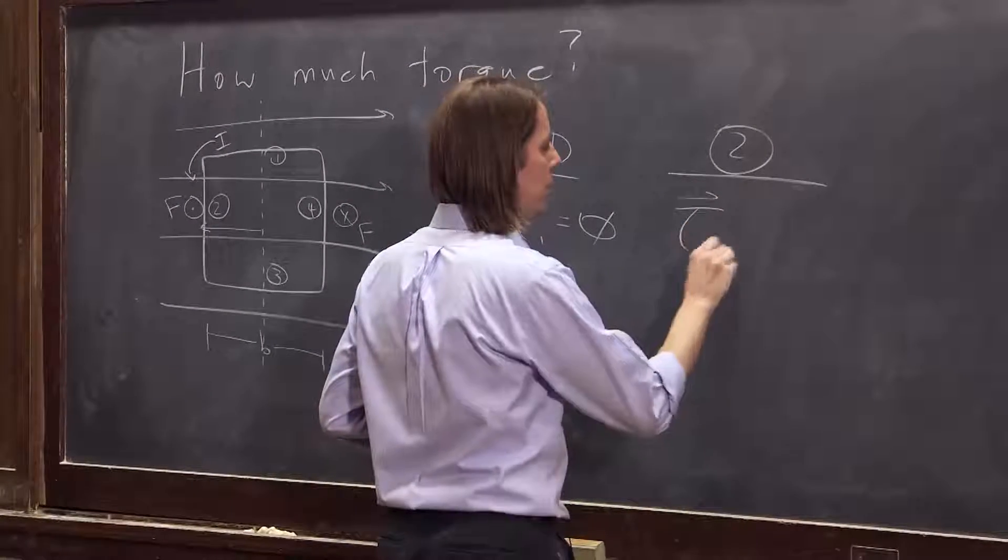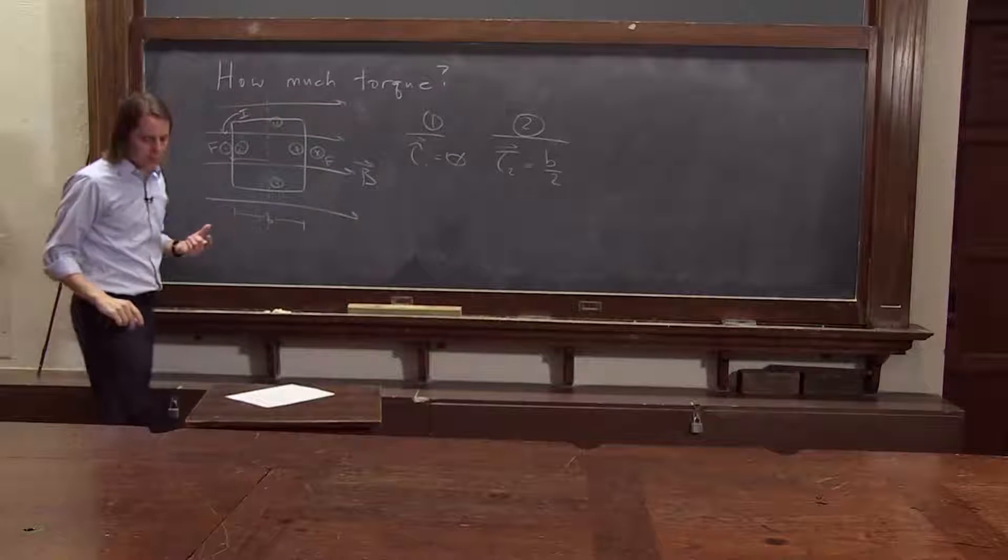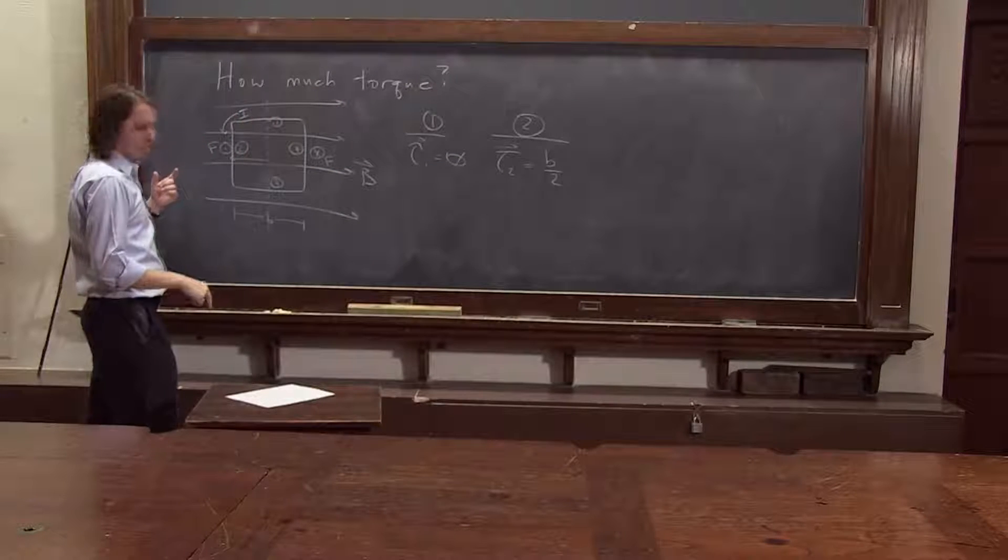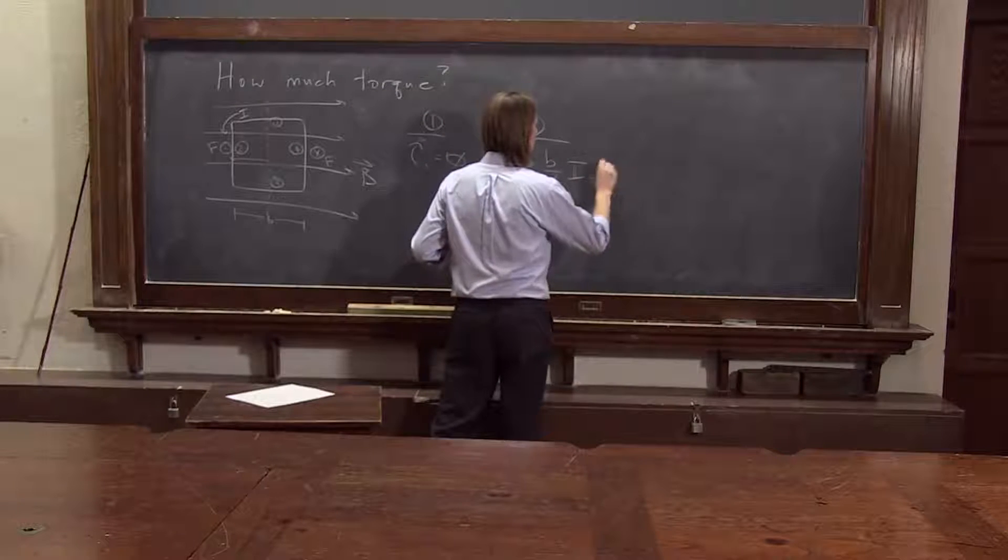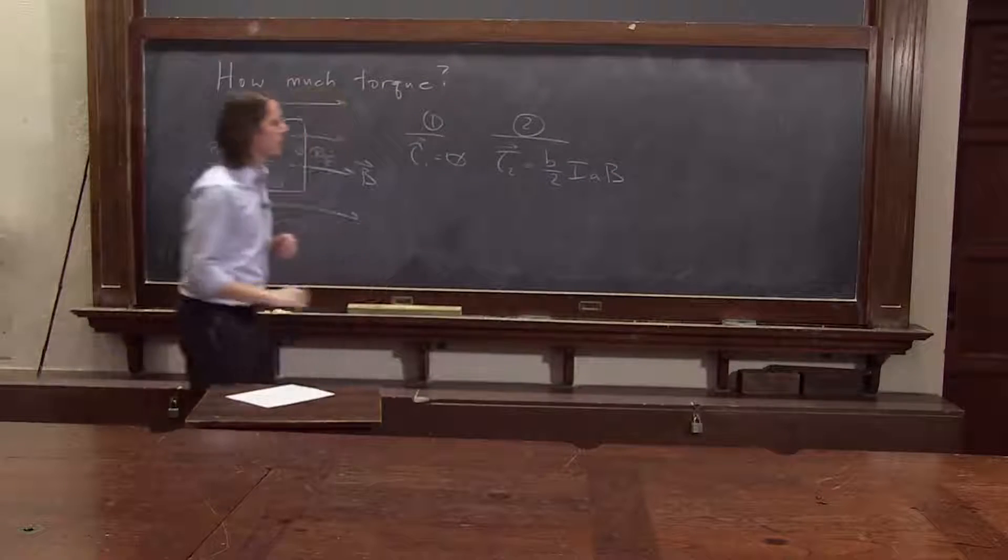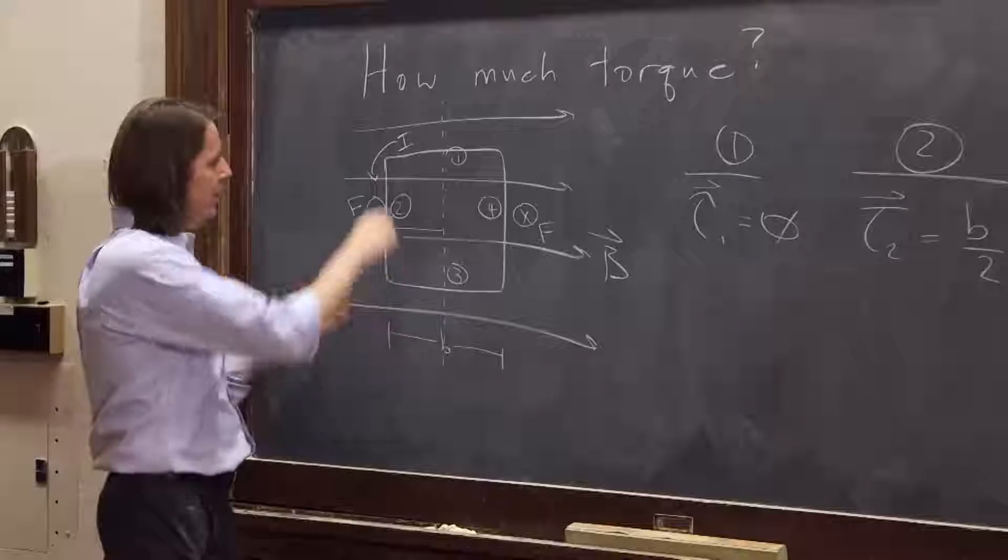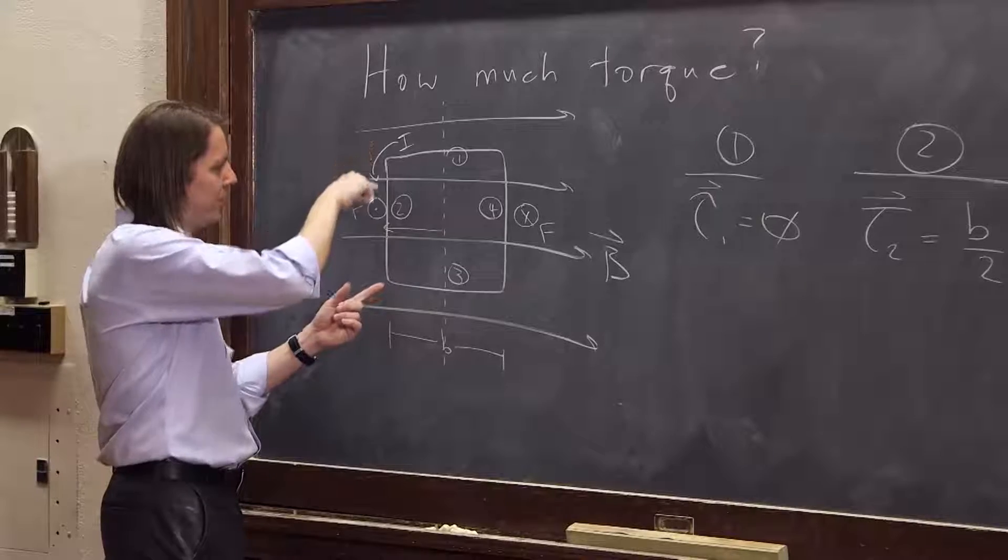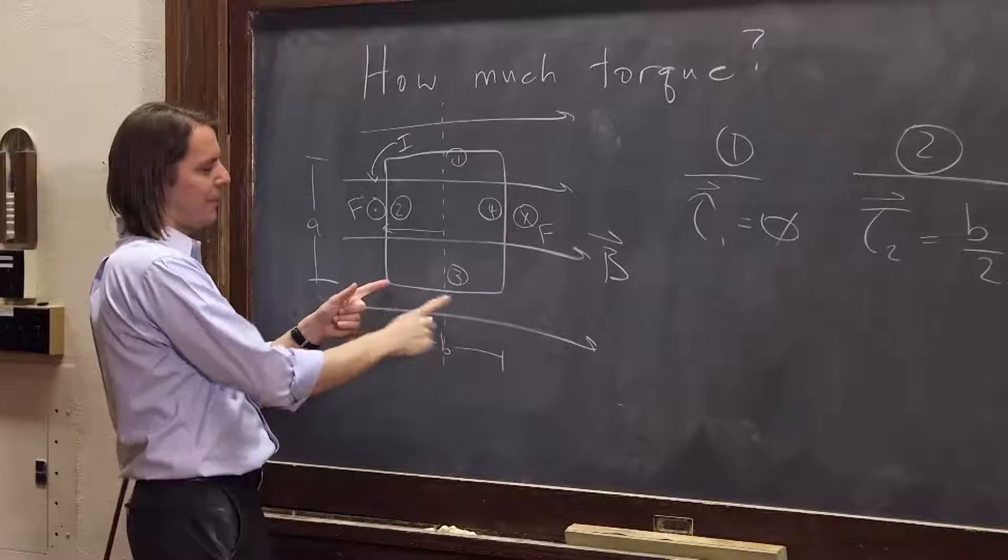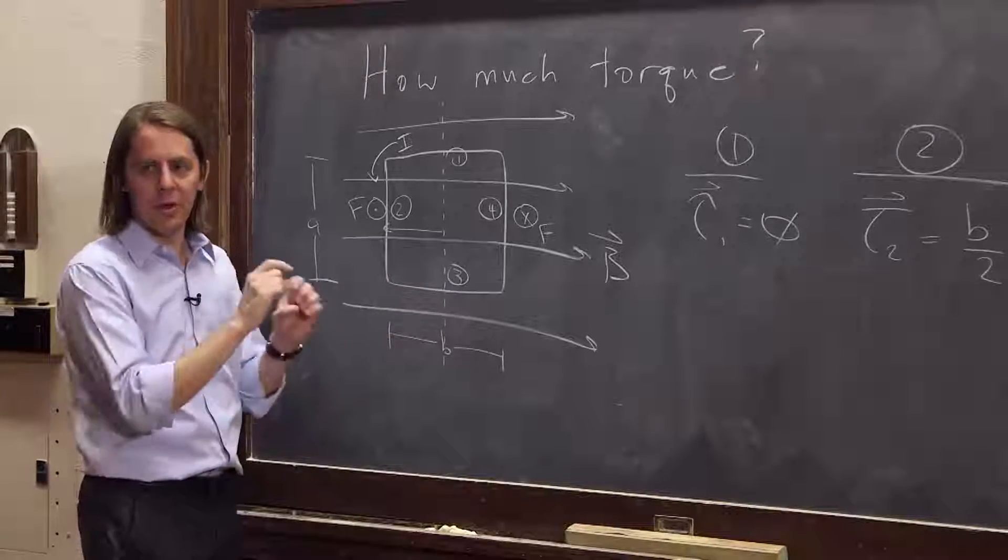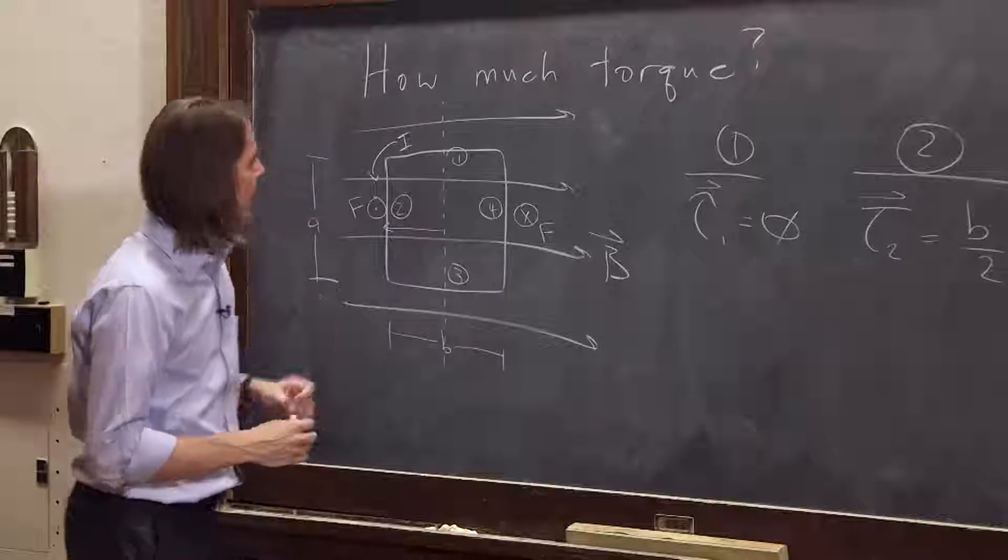So torque two is B over two is the R. The force was little a times B. Now you're going to say, wait, we mixed up little a and little b, but we were supposed to. For this one, for the force, what mattered was this length along this direction, A. For the torque, what matters is how far it is from the axis of rotation. So little a and little b are both in there. And remember, big B is a magnetic field.